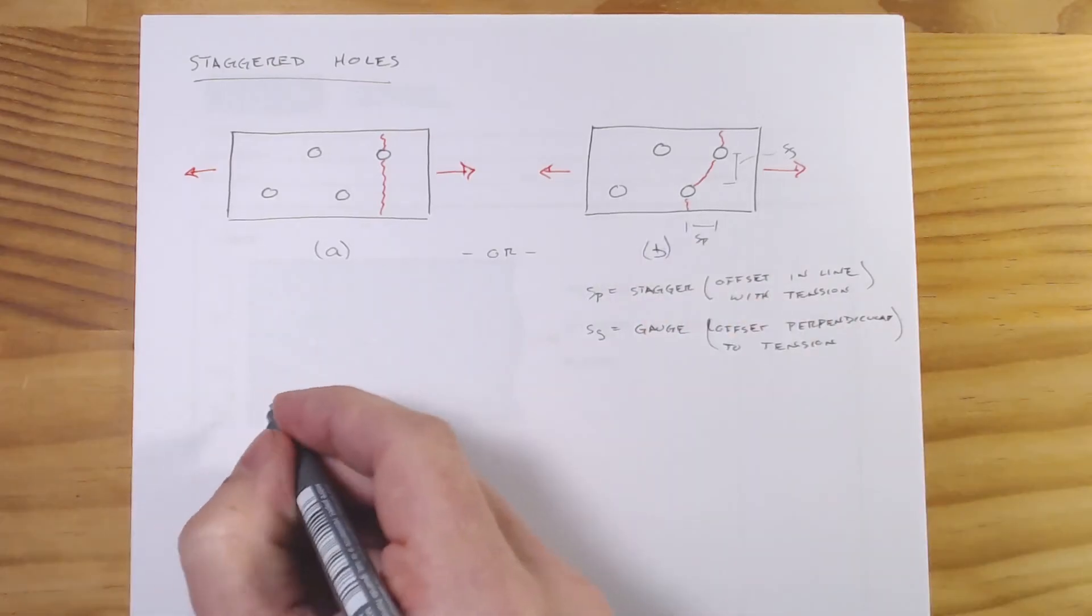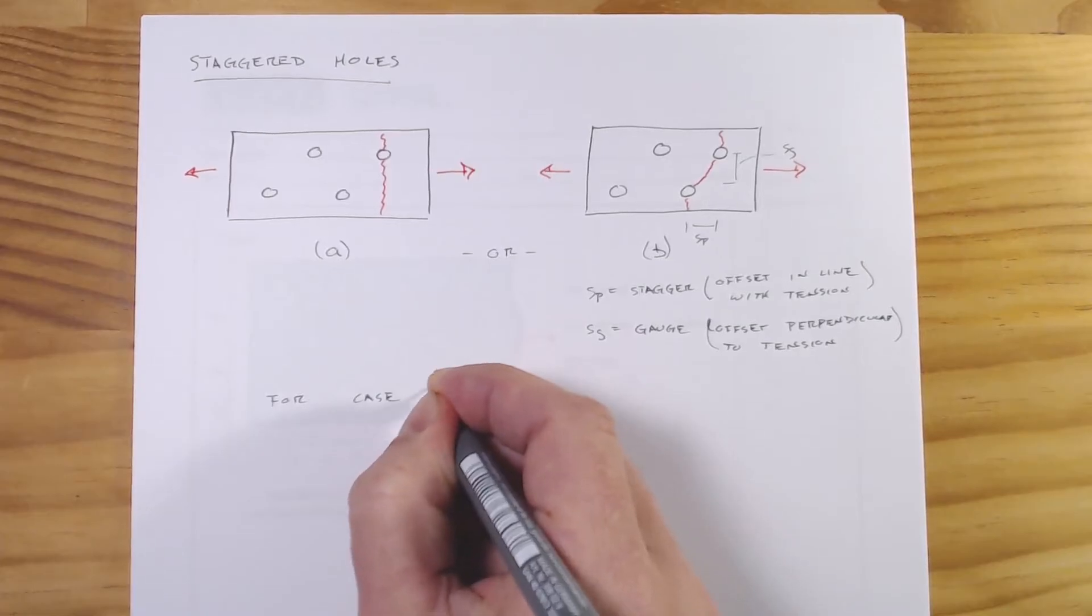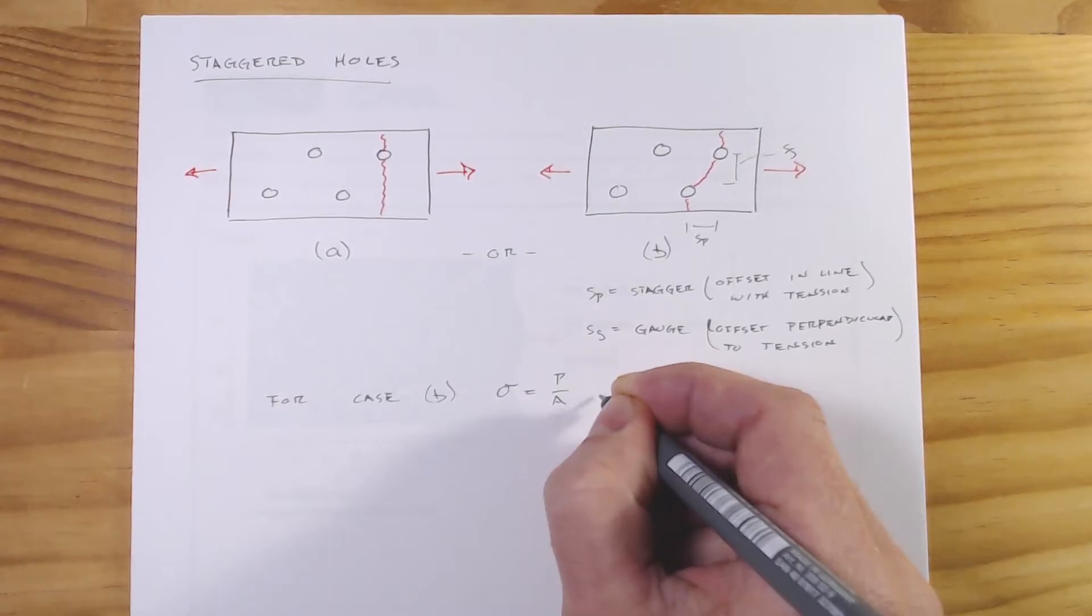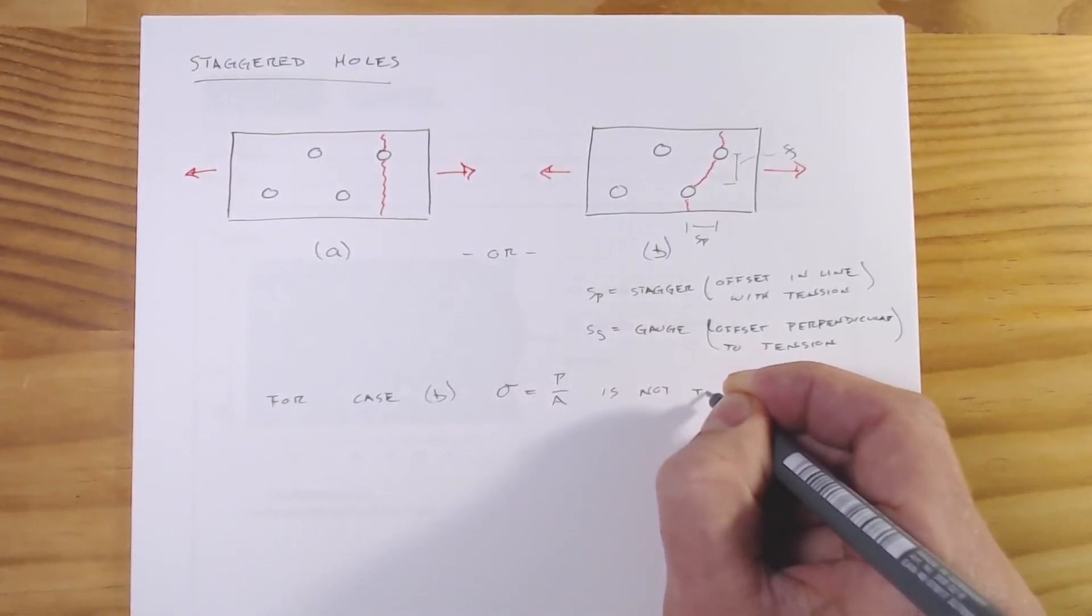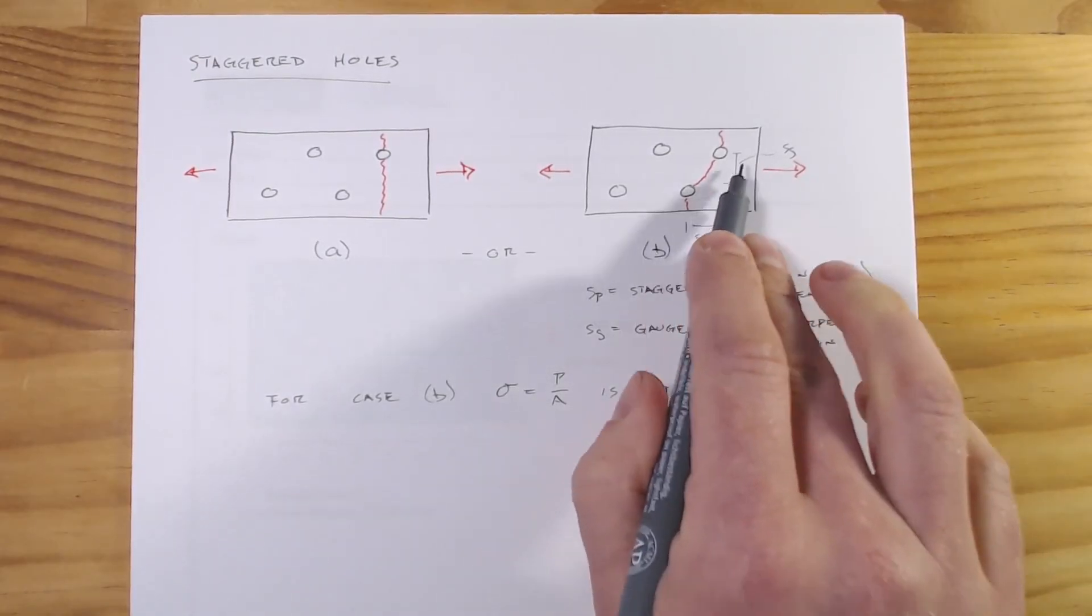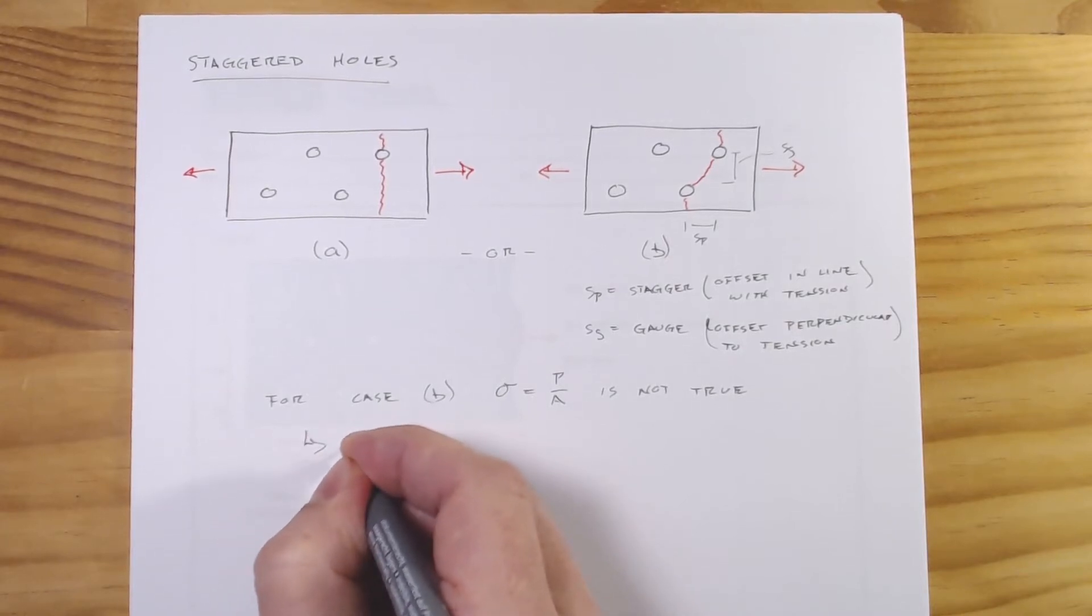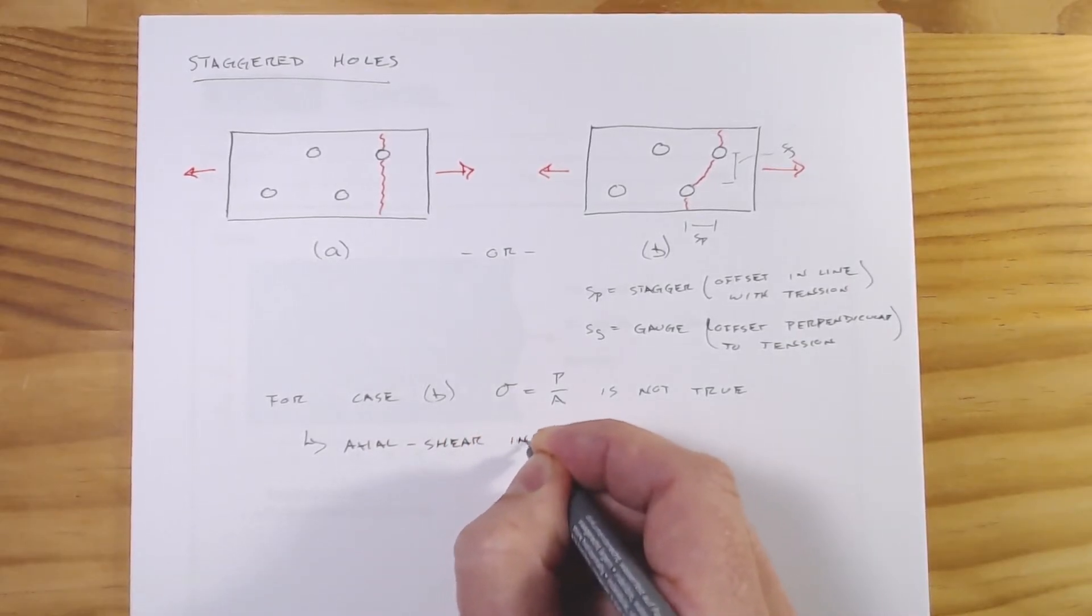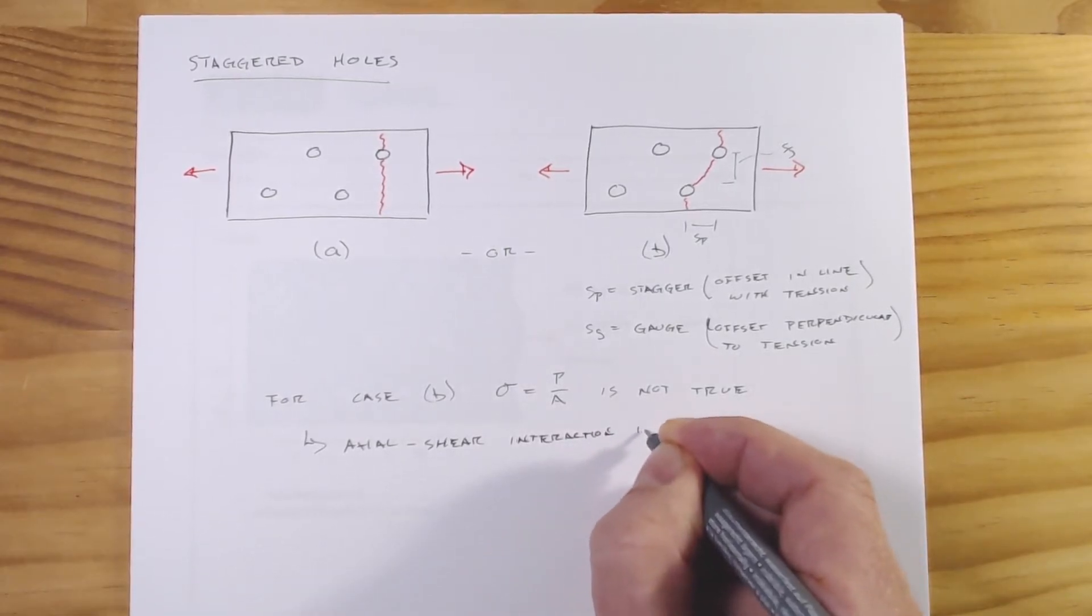For case B, stress equal to P over A is not true, and the reason it's not true is there is some interaction due to the axial load and the shearing across here. So we've got an axial shear interaction is present.